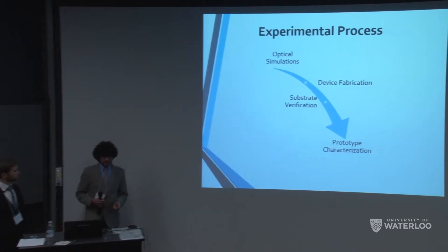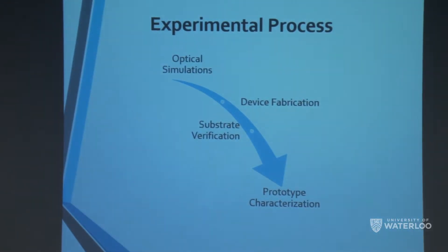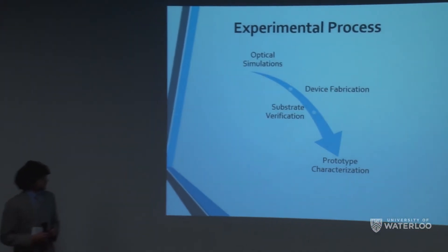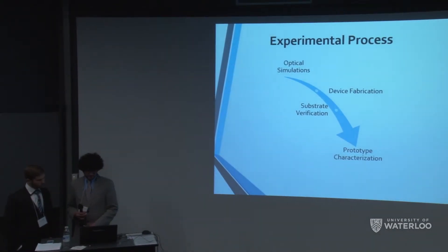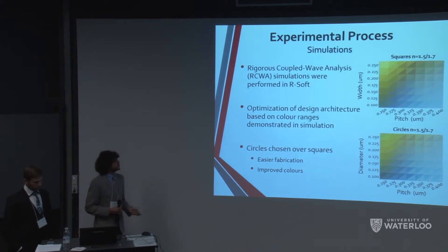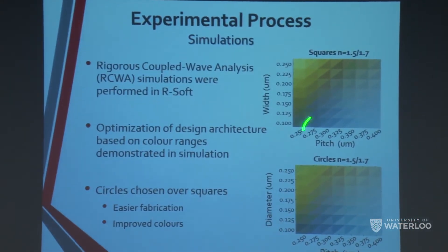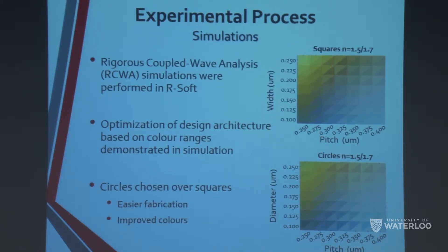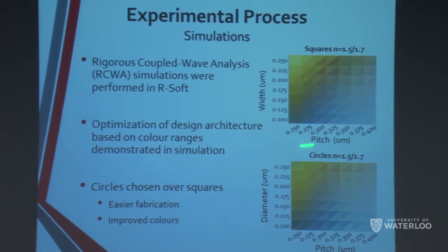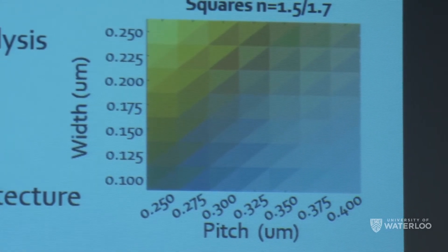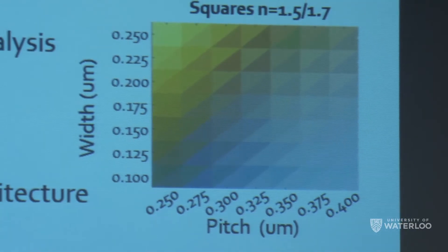We started by doing optical simulations to understand if this method is even feasible. Using rigorous coupled-wave analysis on a commercial software called Rsoft, we simulated reflected colors from two different geometries — square plasmonic gratings and circular ones. We varied the periodicity and widths of the grating structures. Each cell in the simulation is divided into two colors because we ran simulations for refractive indices of 1.5 and 1.7, and you can see that the change in color is actually apparent.